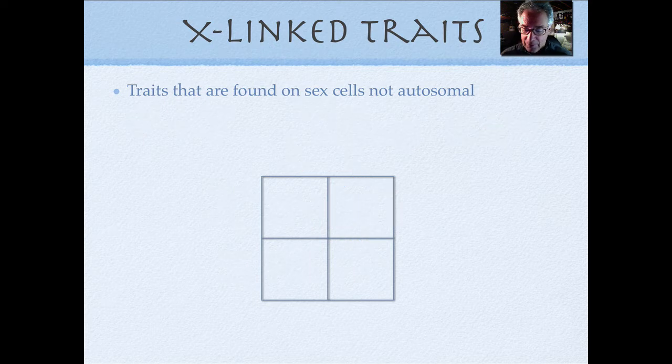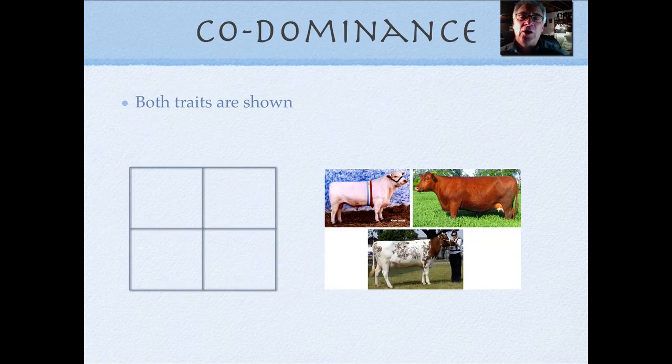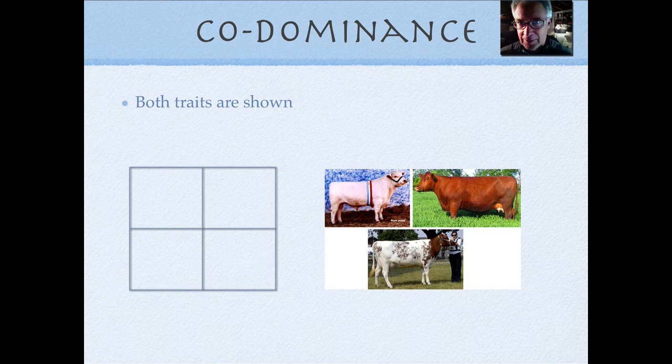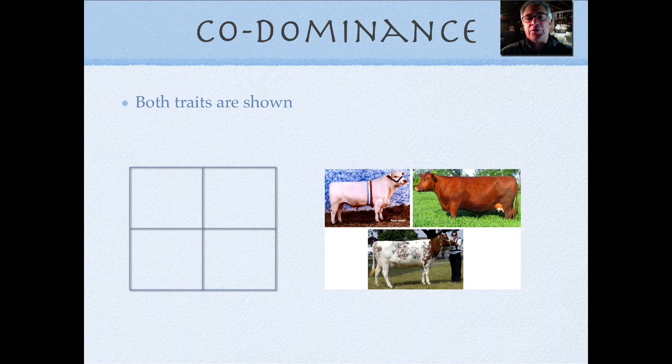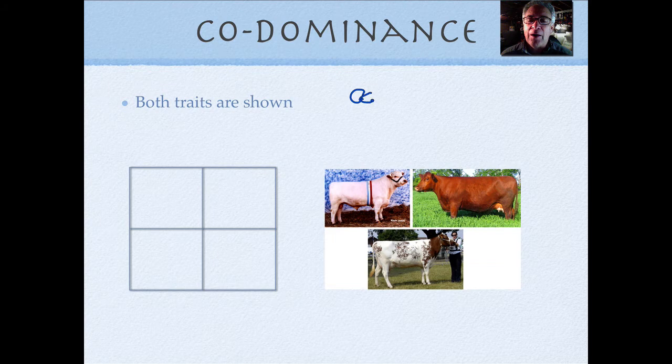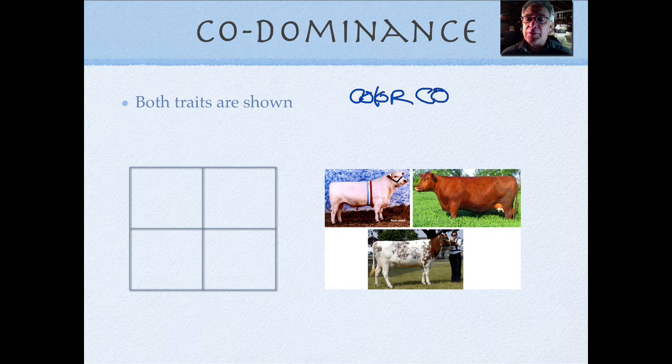So that is that one. And then there's two other ones called codominance and incomplete dominance. A codominance means that both traits are trying to get out. They're trying to kind of fight it out to see which one will be shown. And in cattle, coat color.